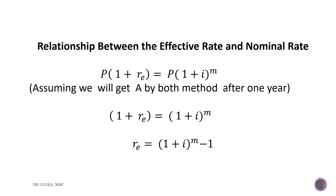Cancel P from both sides, so 1 plus Re equals 1 plus i, whole raised to the power m. Therefore Re equals 1 plus i, whole raised to the power m, minus 1. This is the formula of effective rate of interest.